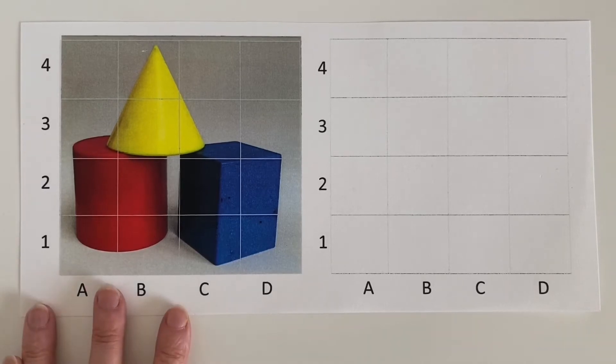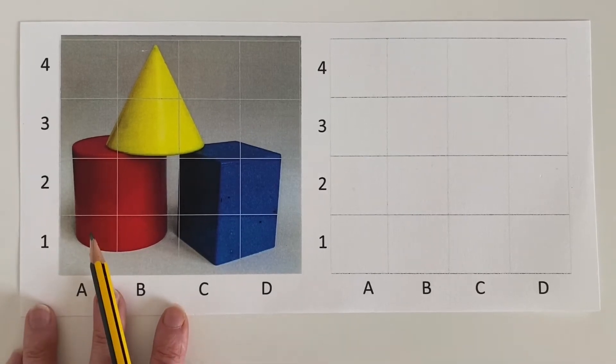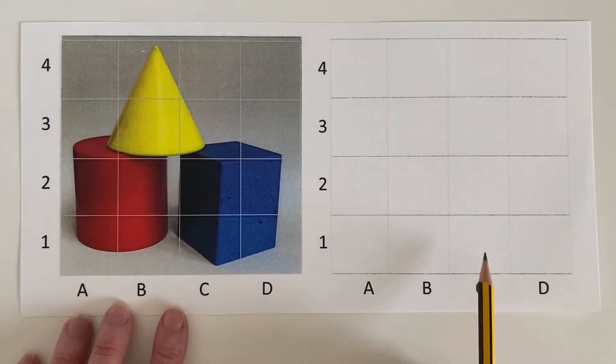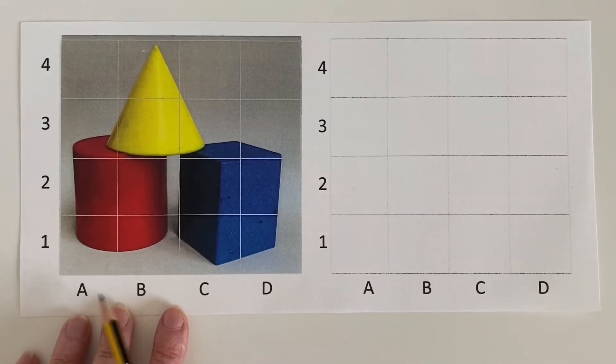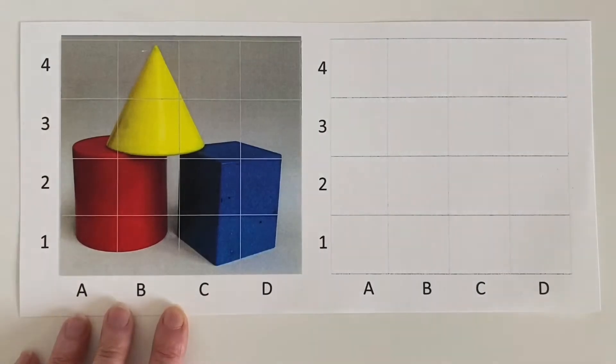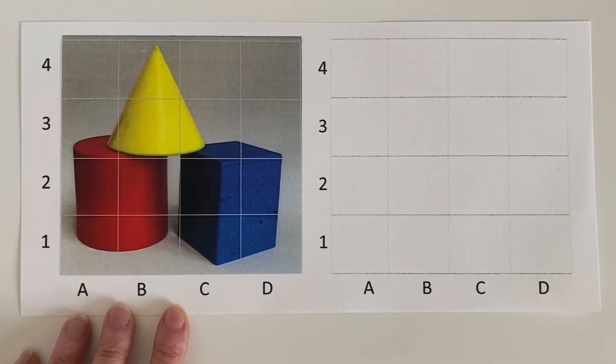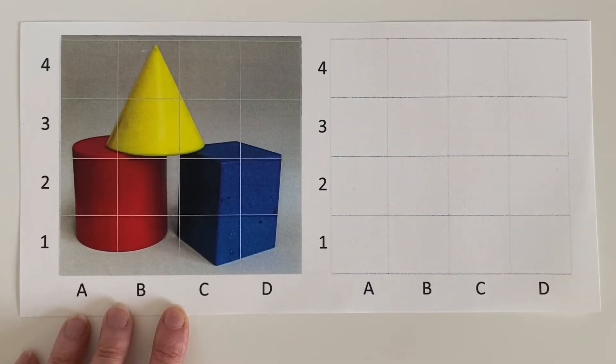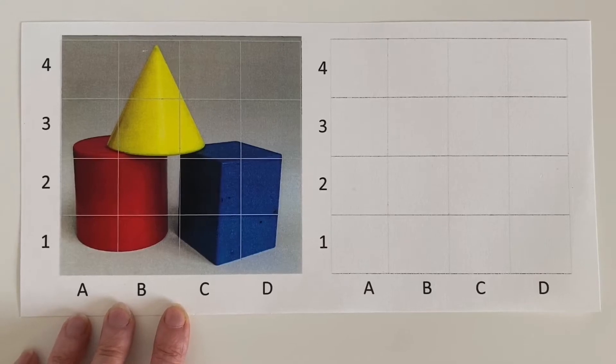So we have here an image of our cylinder, cone and cube with a grid over the top of it and you can see a corresponding grid on the x-axis labeled ABCD and on the y-axis labeled one two three four. So you are going to look at each box and look at intersecting lines first of all in the image and the grid.